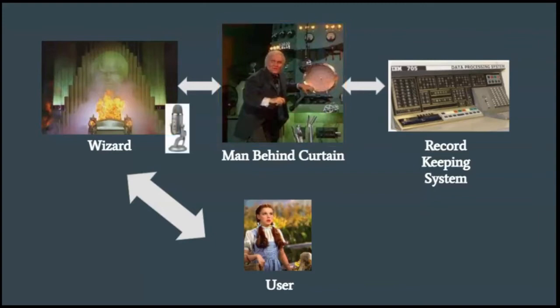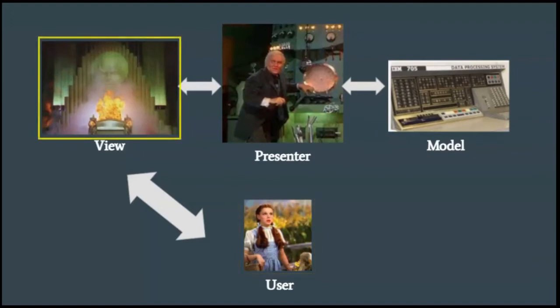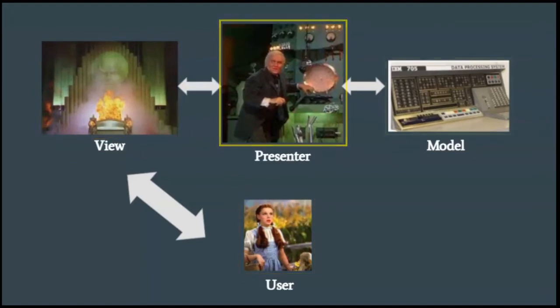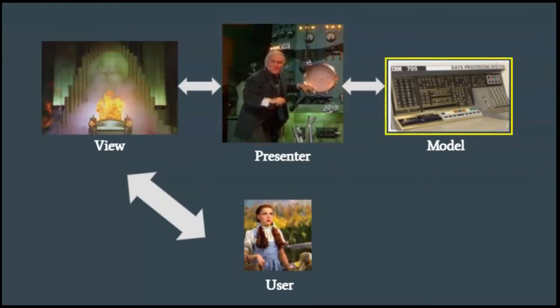The man behind the curtain then hears Dorothy's voice through the microphone and makes the wizard's head move using sophisticated levers and gizmos. The man behind the curtain also enters data into the computer system that stores information about the current state of the wizard's head. In this case, Dorothy is the user, the wizard head is the view, the man behind the curtain is the presenter, and the computer system that stores what the wizard head should do is the model.